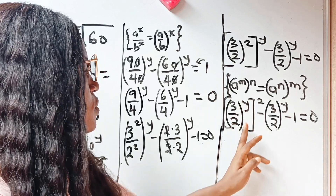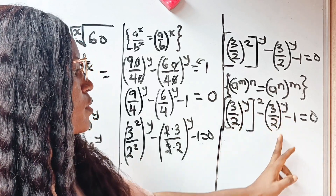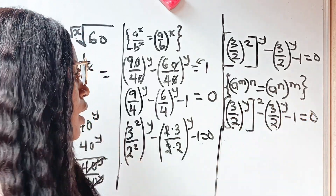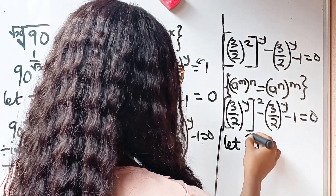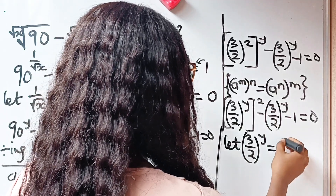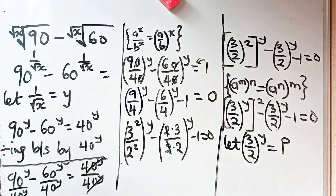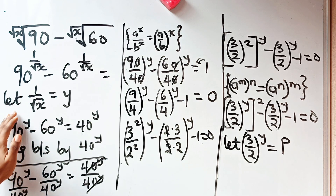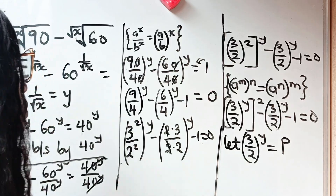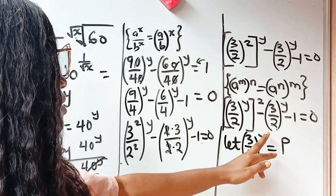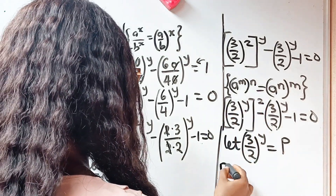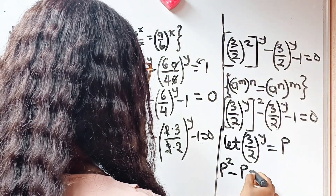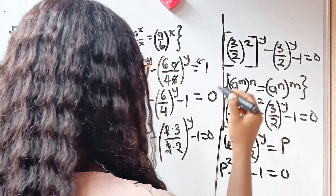We have (3/2)^y appearing multiple times, so let's substitute. Let (3/2) to the power of y equal p. That means our equation becomes p squared minus p minus 1 equals zero.